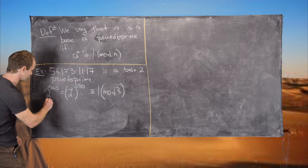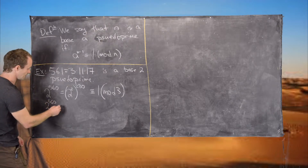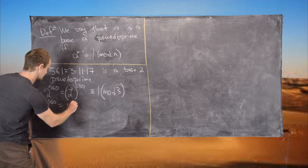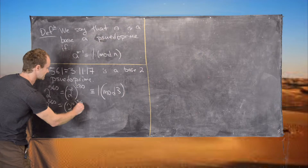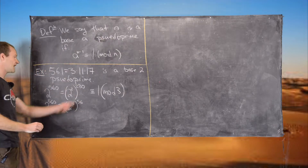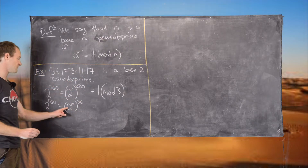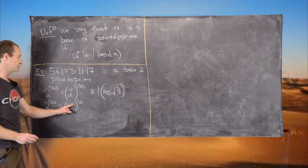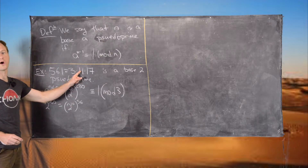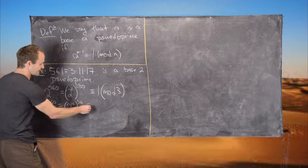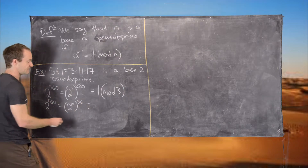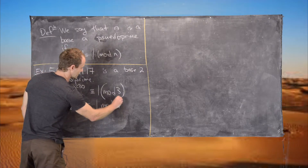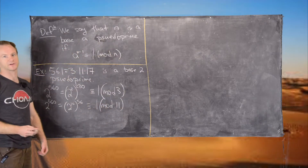Next we look at 2 to the 560, which equals 2 to the 10, all to the power 56. Because 11 is prime and 2 is relatively prime to 11, 2 to the 10 is congruent to 1 mod 11 by Fermat's Little Theorem, which means 2 to the 10 to the 56 is 1 to the 56, which is 1 mod 11.